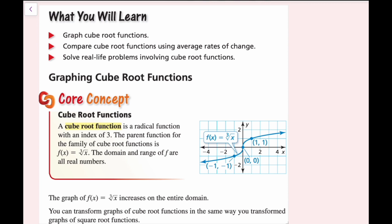A cube root function is a radical function with an index of 3. The parent function for the family of cube root functions is f(x) equals the cube root of x. The domain and range of f are all real numbers. The graph of f(x) equals the cube root of x increases on the entire domain. You can transform graphs of cube root functions in the same way you transform graphs of square root functions. Notice we have all possible x values here because you can take the cube root of a negative number, whereas with the square root or any even index root, you cannot take that root of a negative number.